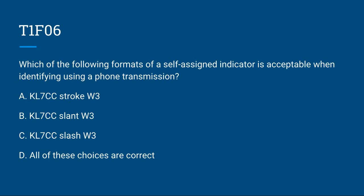T1F06: Which of the following formats of a self-assigned indicator is acceptable when identifying using a phone transmission? A. KL7CC stroke W3. B. KL7CC slant W3. C. KL7CC slash W3. Or D. All of these choices are correct. Correct answer is D: all of these choices are correct.